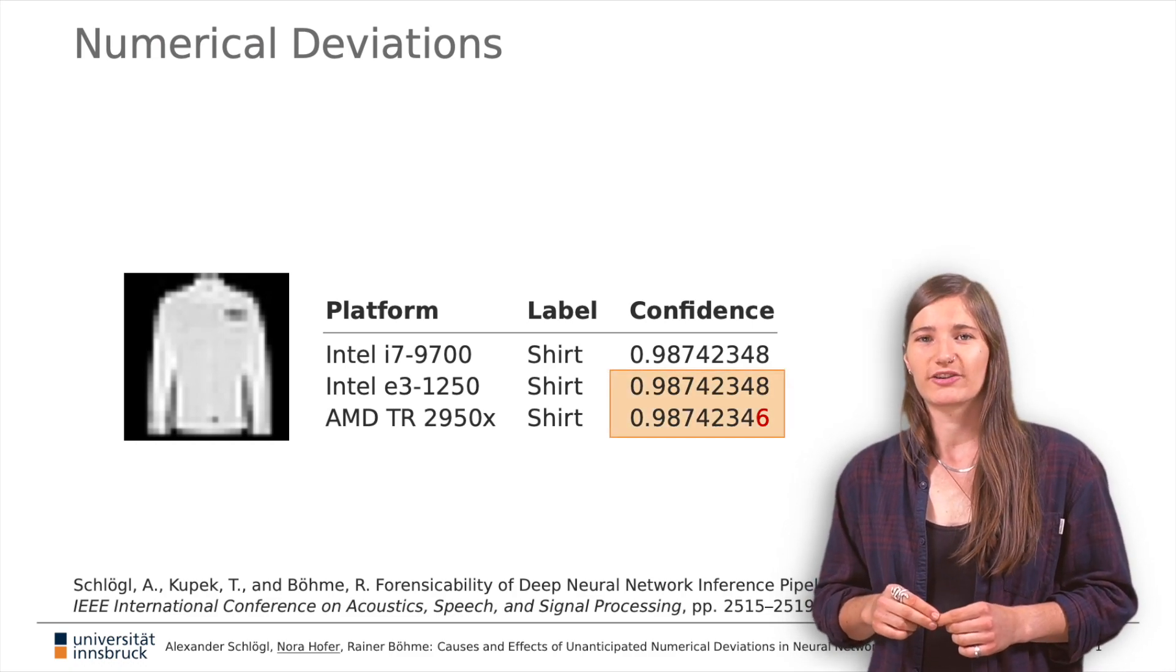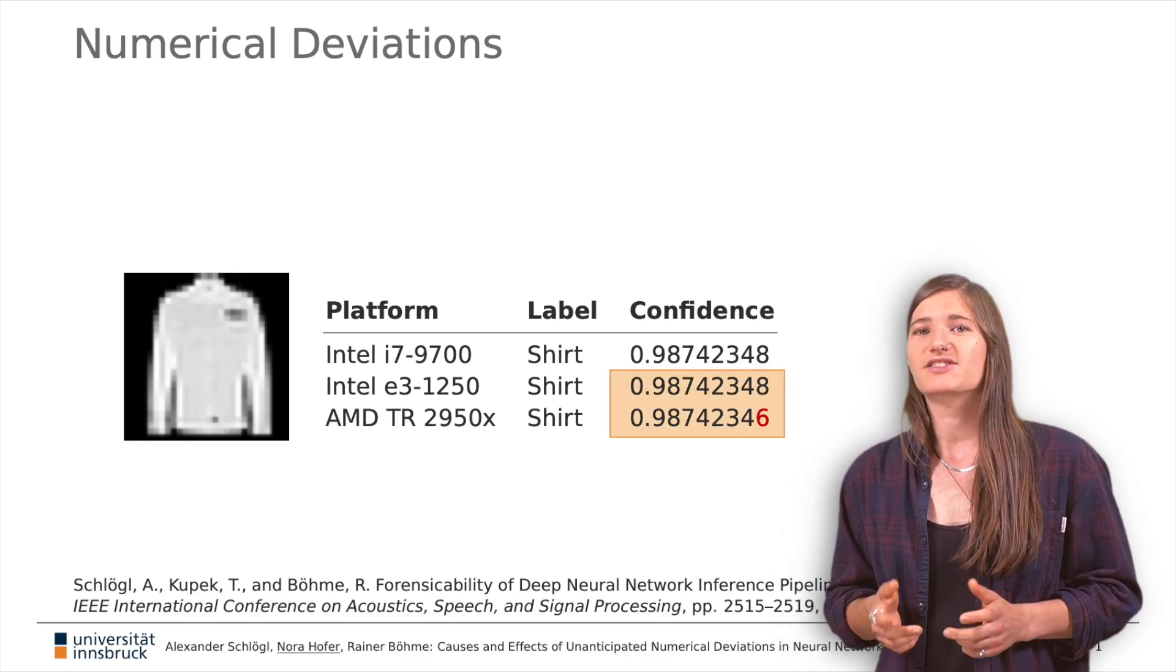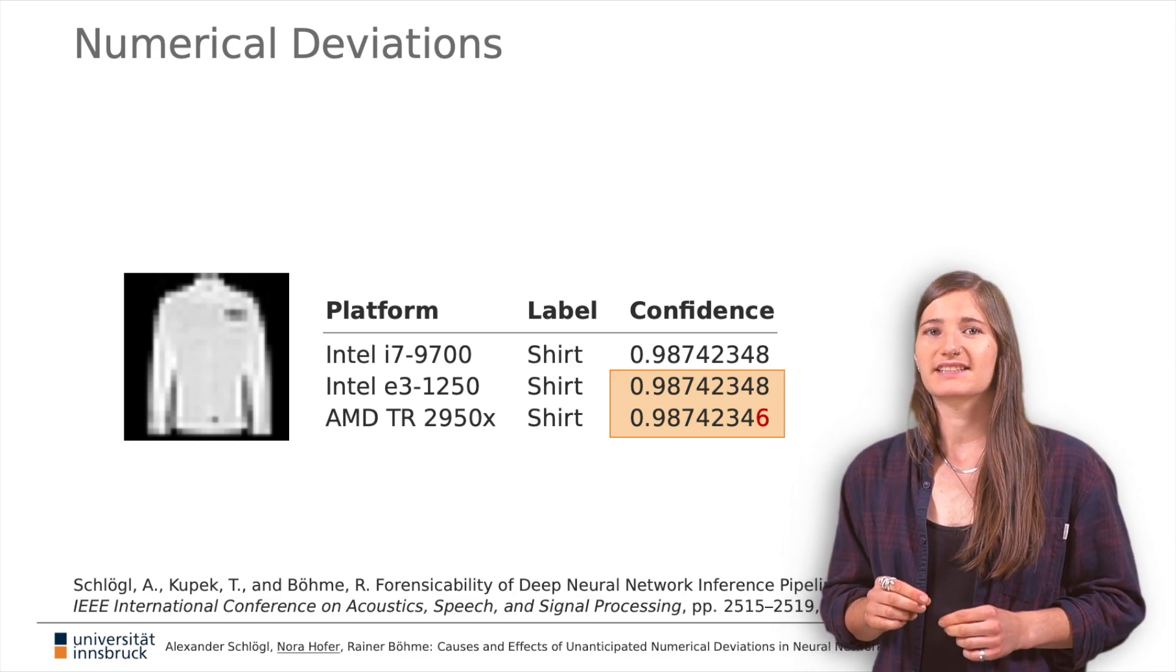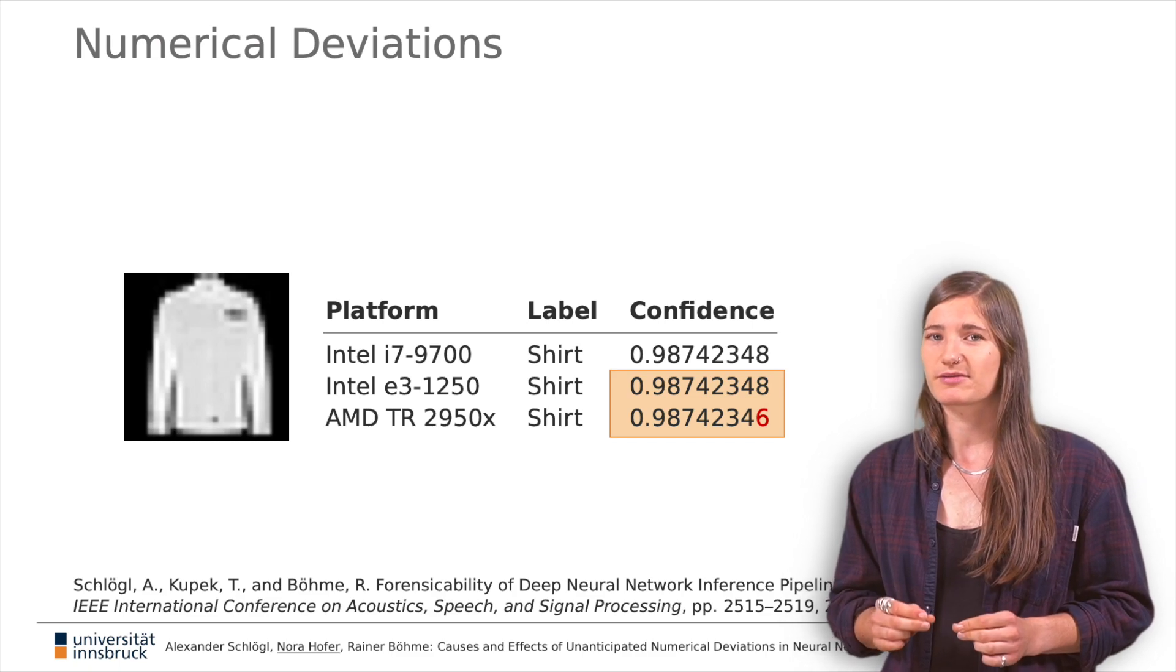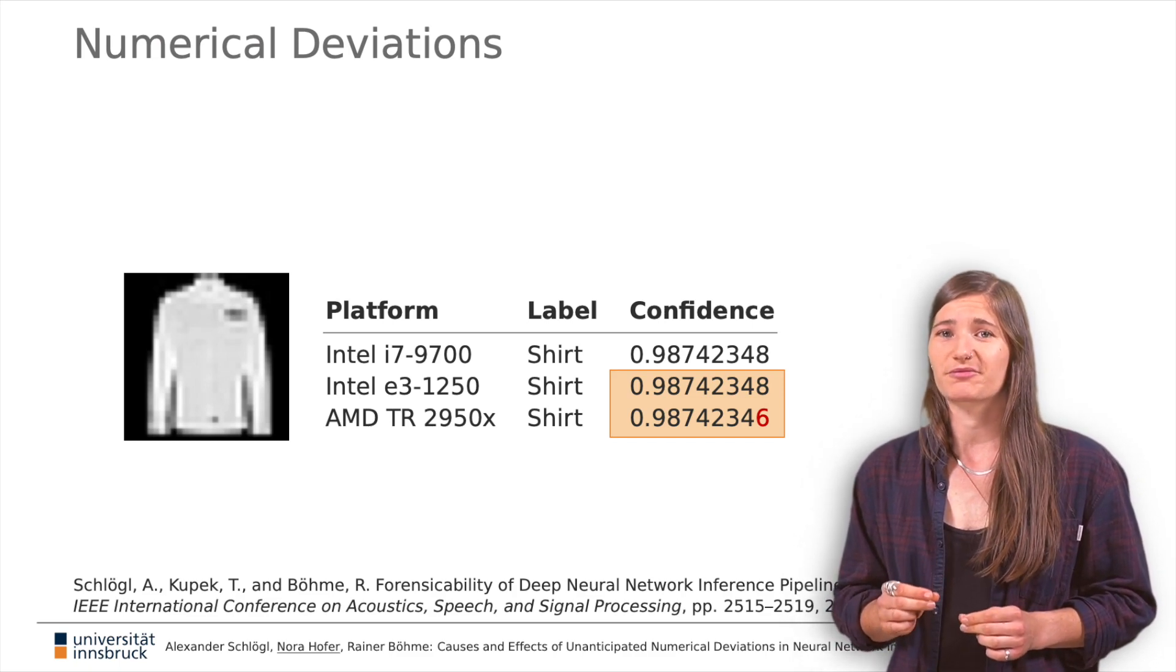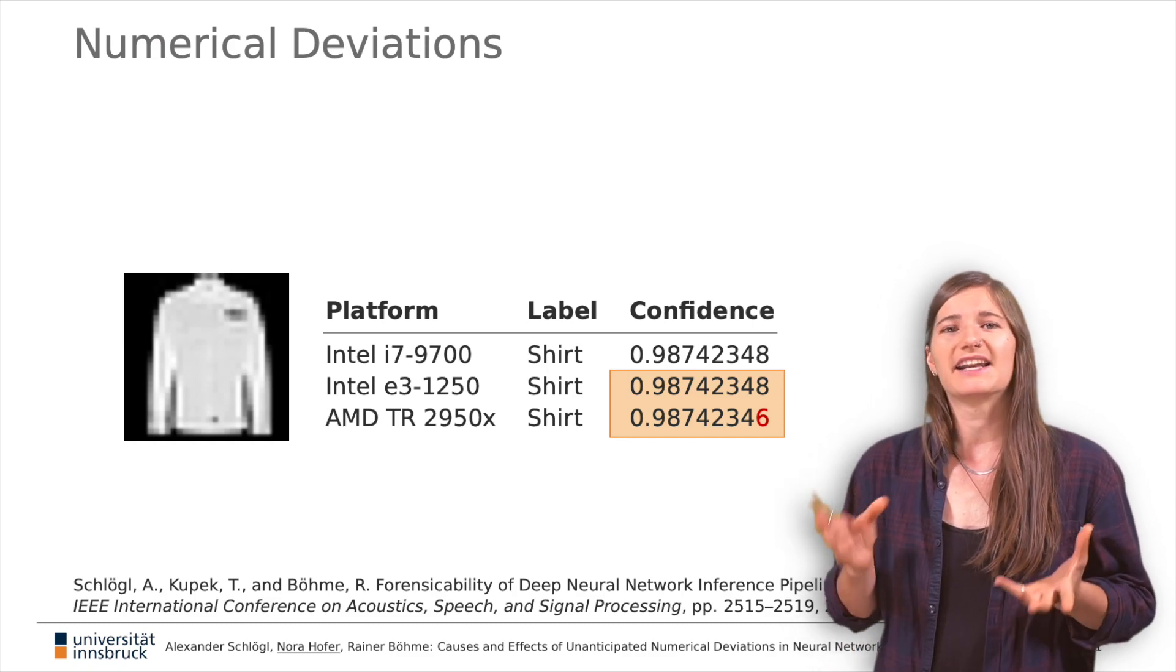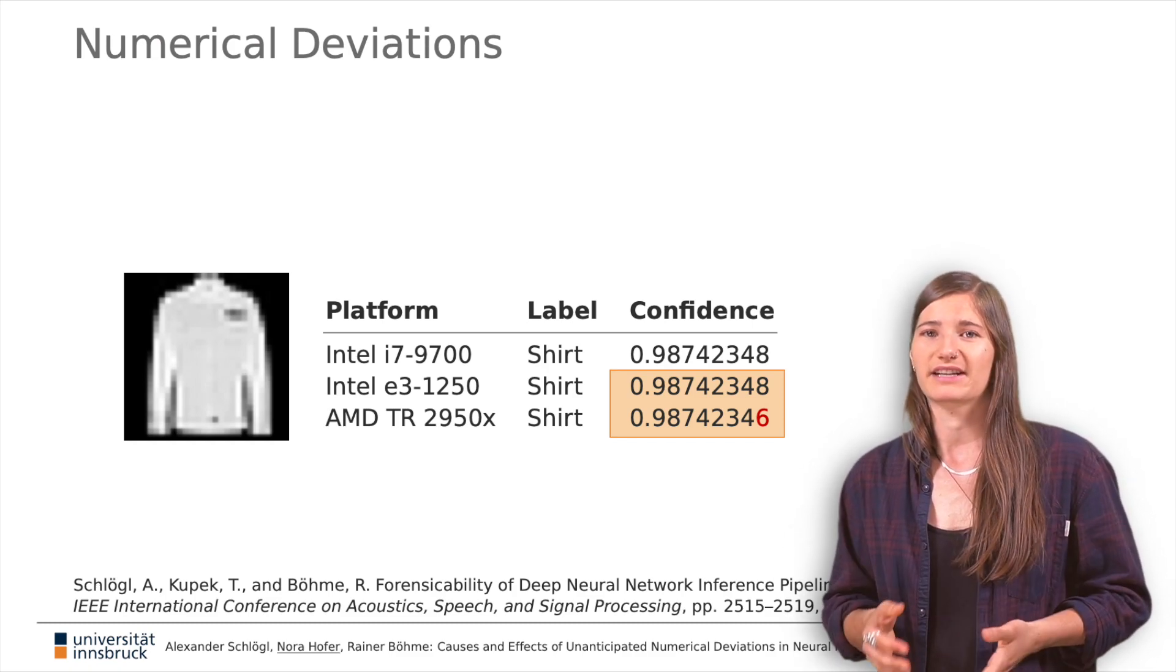My co-author Alexander Schlögel and colleagues discovered this two years ago. They used nine different CPUs and found that depending on the machine learning model, the tested platforms produce up to six different softmax vectors. Of course, these deviations appear random and are very small, hence they rarely affect the final class label.